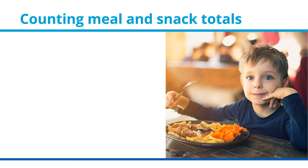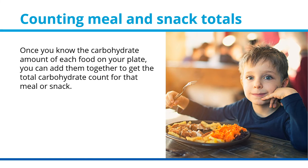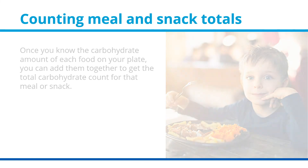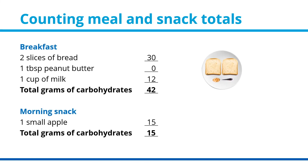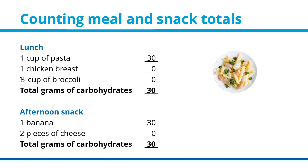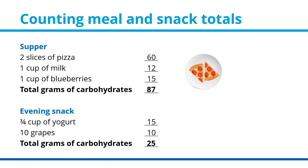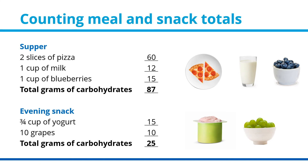Counting meal and snack totals. Once you know the carbohydrate amount of each food on your plate, you can add them together to get the total carbohydrate count for that meal. For example, breakfast of two slices of bread with one tablespoon of peanut butter and a cup of milk adds up to 42 grams. A morning snack of a small apple is about 15 grams. Lunch of a cup of pasta with a chicken breast and half a cup of broccoli is 30 grams. An afternoon snack of a banana and a couple of pieces of cheese is another 30 grams. Supper of two slices of pizza, a cup of milk, and a cup of blueberries adds up to 87 grams. An evening snack of three-quarters of a cup of yogurt and 10 grapes is 25 grams.